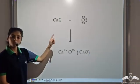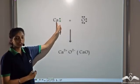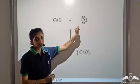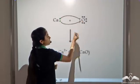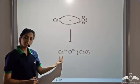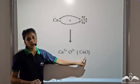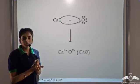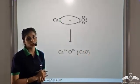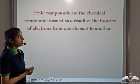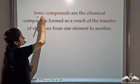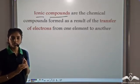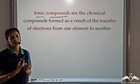This can also be represented by showing the number of valence electrons. Calcium has 2 valence electrons and oxygen has 6. Calcium gives its 2 valence electrons to oxygen, becoming Ca²⁺ and O²⁻, which we write as CaO — calcium oxide. Since one atom loses electrons and the other atom gains electrons, this compound is an ionic or electrovalent compound. Ionic compounds are chemical compounds formed as a result of the transfer of electrons, where one atom loses electrons and the other atom gains electrons.